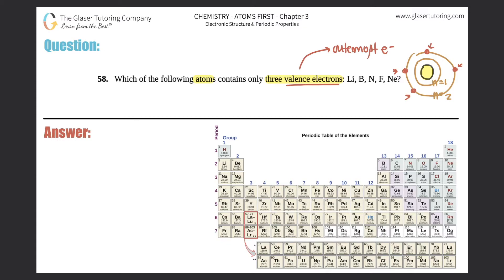There's an easy method to remember how many valence electrons elements have — it goes by the group number. This only works for main group elements. Your main group elements are group 1, group 2, and then groups 13 through 18. The transition metals from groups 3 to 12 do not follow the valence electron trick.